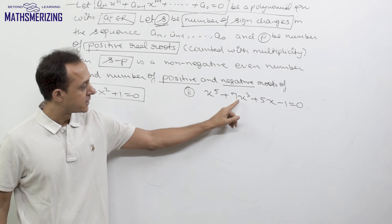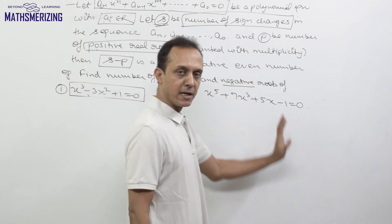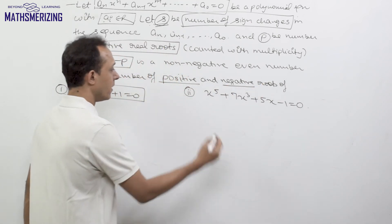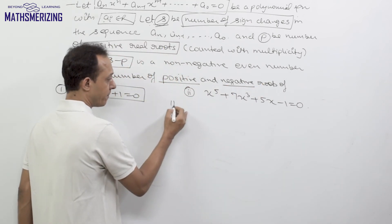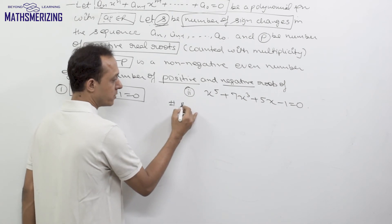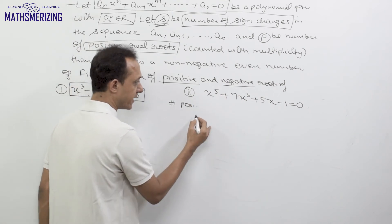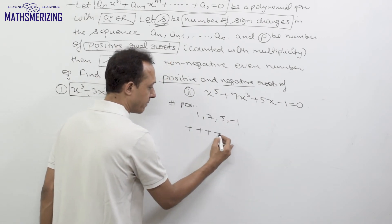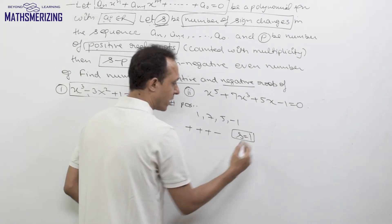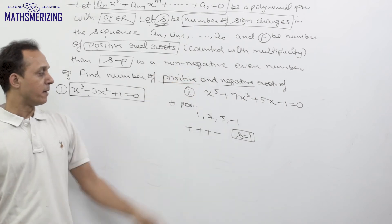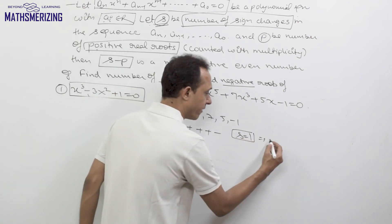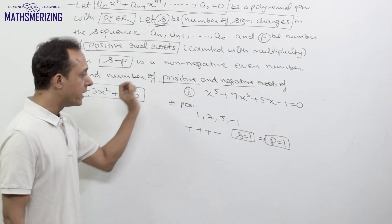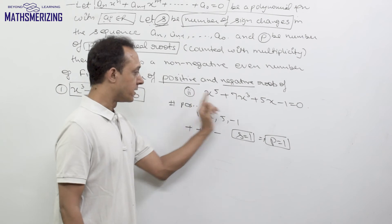Now suppose the equation is x⁵ + 7x³ + 5x - 1 = 0, and we again have to find the number of positive and negative real roots. For positive roots, I write the sequence: 1, 7, 5, -1, giving signs plus, plus, plus, minus. The number of sign changes is 1. Since s minus p must be a non-negative even number, the only possibility is p = 1. So this fifth-degree equation has exactly one positive real root.